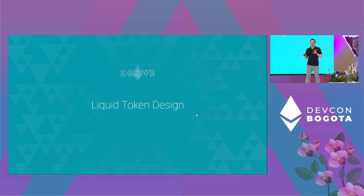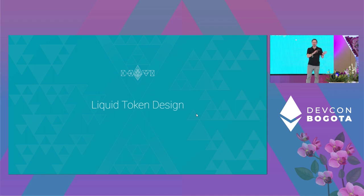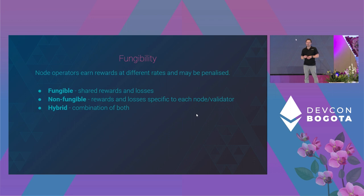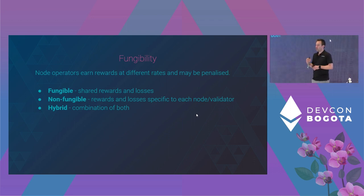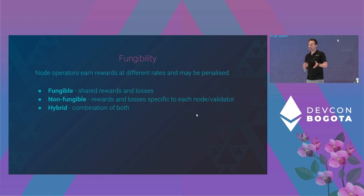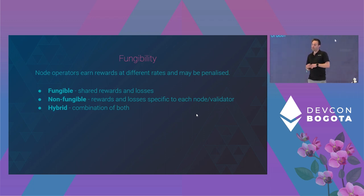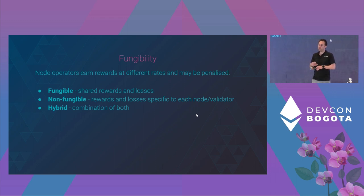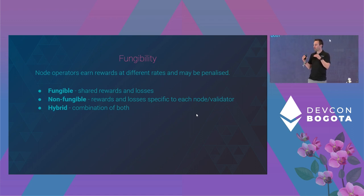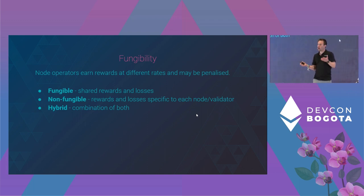In this section I want to focus on liquid token design, though there are some equally big design spaces on the node operator side. The first thing you realize when designing a liquid staking token is that node operators earn rewards at different rates. They may also be penalized and in worst case scenarios they can be slashed. One way to handle this is to have a fungible token that shares rewards and losses across the entire protocol. Or you can have a non-fungible token where rewards and losses are specific to each node operator or each validator. You can also have a hybrid of the two, although you've got to be careful you don't end up in a worst of both worlds situation.